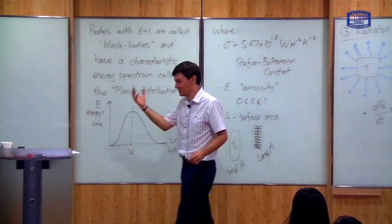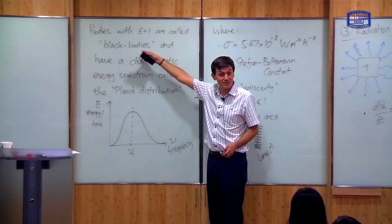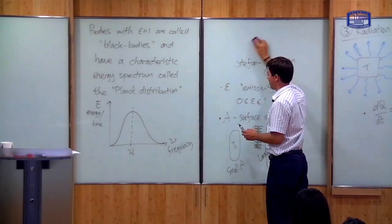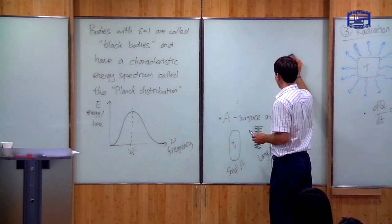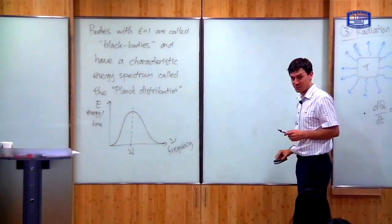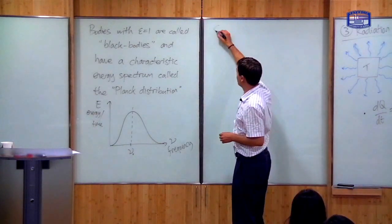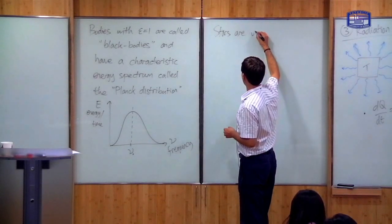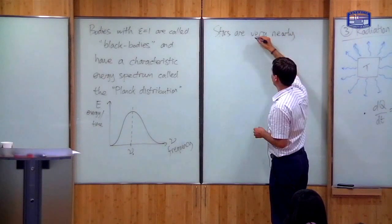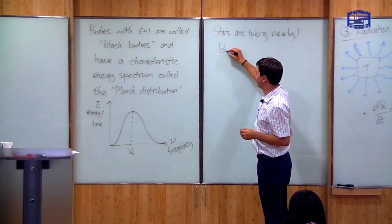Stars are very nearly black bodies, which is a fact that is very important in astronomy. By looking at the light a star emits, we can determine its temperature. They are not quite perfect black bodies because they have some absorption lines in the spectrum, but they are very nearly so.